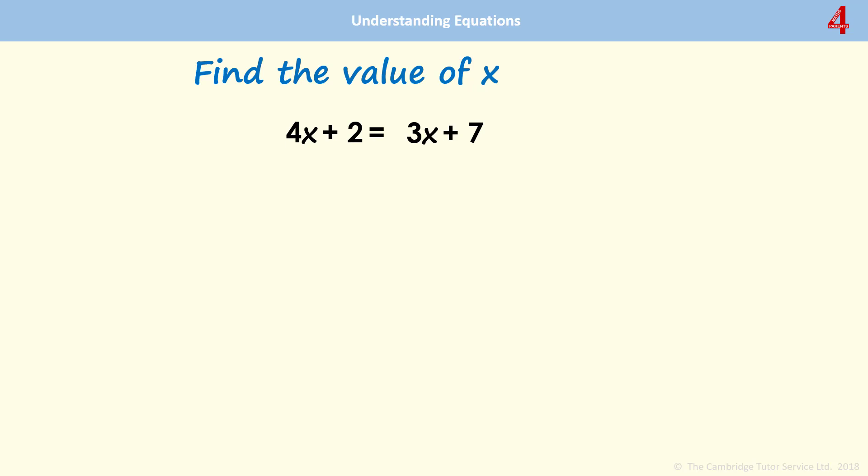Looking here at linear equations. So the first one we have 4x plus 2 is the same as 3x plus 7. And what we need to do is end up with the x's on one side and those extra numbers on the other.